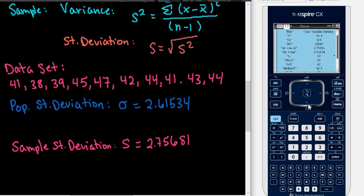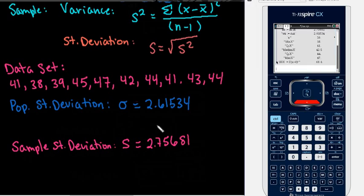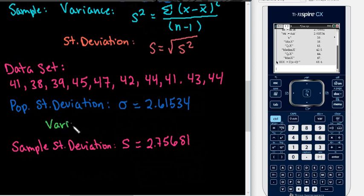On this screen, even though it gives me a lot of information, it does not give me the variance. So if you need to find the variance, you just have to remember that the variance is found by, if you're dealing with a population, you would just square your standard deviation. Same thing for the sample. If you're looking for the variance, you would just square your standard deviation.